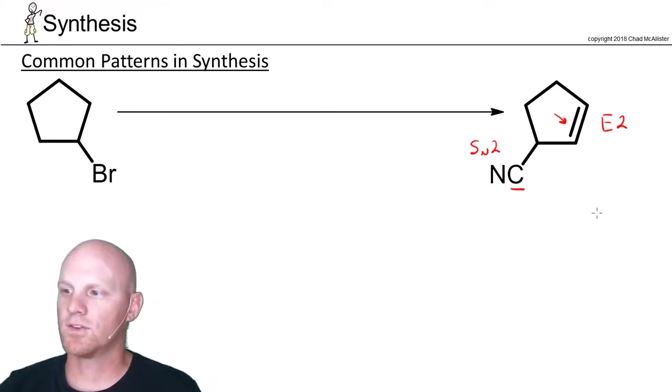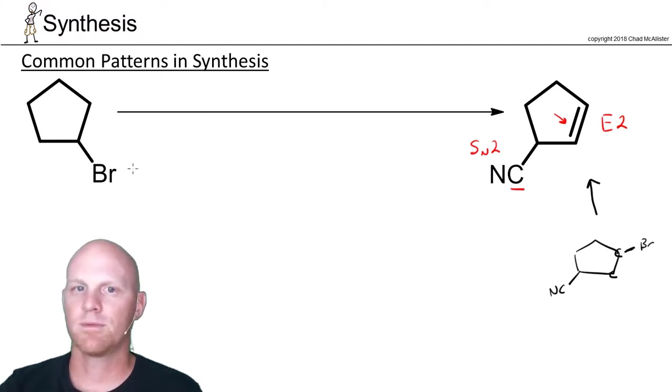So what if we decide E2 is the very last thing we're going to do in this process? If that were the case, then I would need to have a good leaving group. So we'd already have the cyanide added, and I'd either need to have a good leaving group here or here. Now, if I choose for it to be here, we have a fundamental problem. So in this case, with a good leaving group on a secondary carbon there, I could try and add a bulky base or something like that to make sure it goes E2.